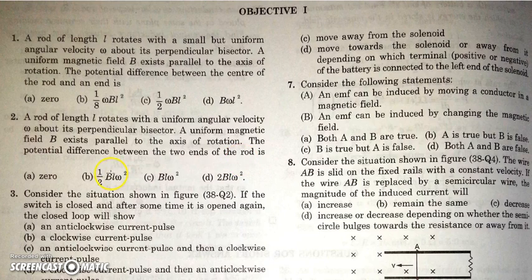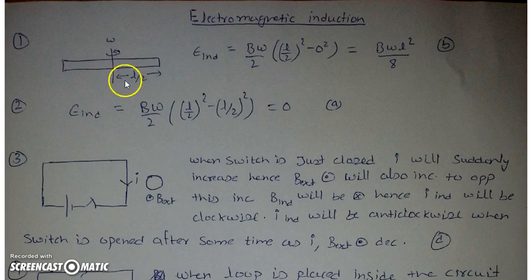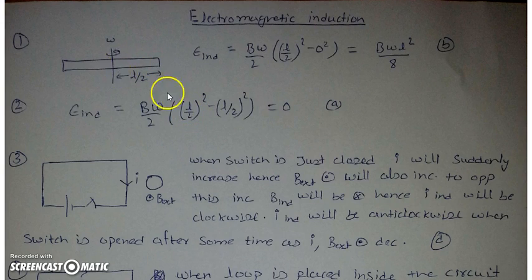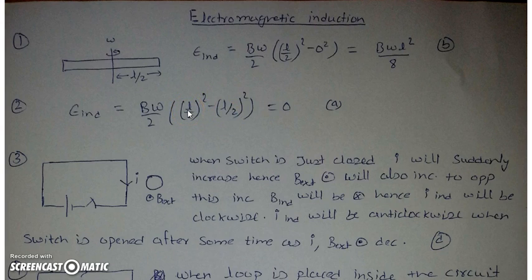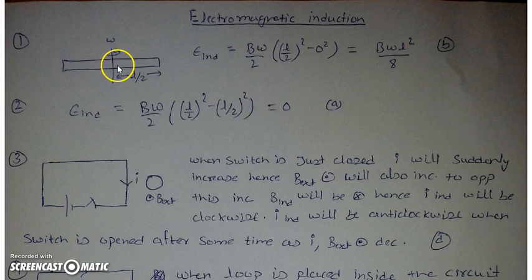In the next question, the same data applies as question one, but we have to find the potential difference between the two ends of the rod. Both ends are at a distance L/2 from the axis, so x1 and x2 are both L/2. It doesn't matter whether they are +L/2 or -L/2, because squaring them removes the sign. So B·ω/2·(x2² - x1²) gives zero. All points equidistant from the axis have the same potential, so the potential difference between them is zero.